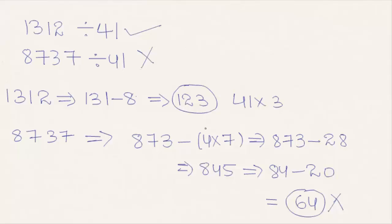So to summarize: to check whether a number is exactly divisible by 41, subtract 4 times the last digit from the remaining number. If the result is divisible by 41, then the original number is also divisible by 41. Hope you understood the concept. Do like and subscribe to vdcheckacademy.com. Thanks for watching, have a nice day.